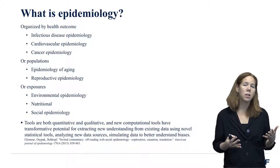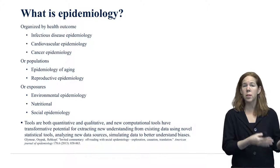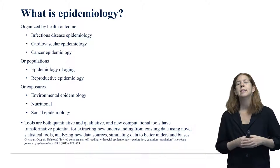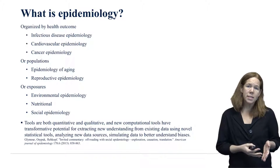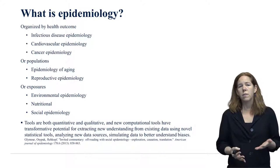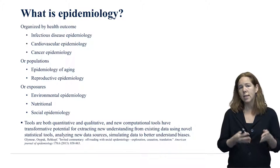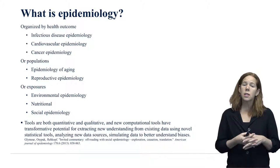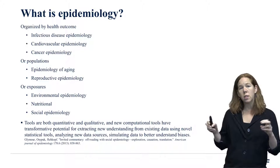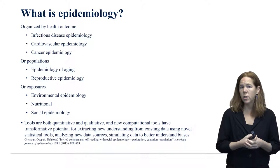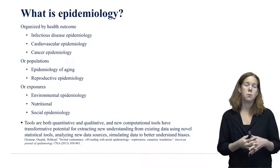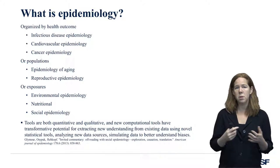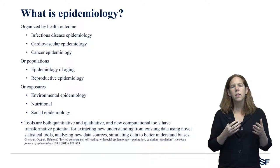Some epidemiologists focus on infectious disease, for example HIV or Ebola. Some focus on cardiovascular disease and stroke, and many focus on cancer epidemiology — cancer and cardiovascular disease being leading killers in the United States. It doesn't just have to be things we conventionally think of as diseases; for example, injury epidemiology is a very important domain, and some of the most remarkable progress in public health has been made in injury epidemiology in the last 40 years.